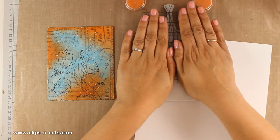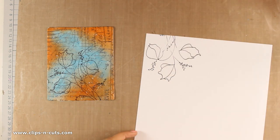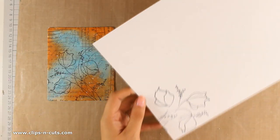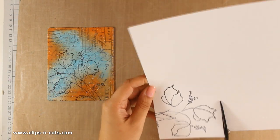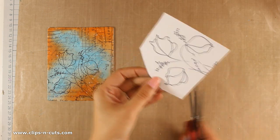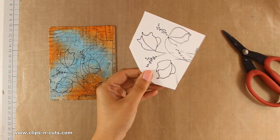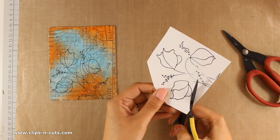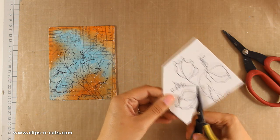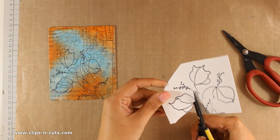Now I am going to stamp again the flowers on a white cardstock, because I want my flowers to be nice, white and vibrant. These are going to make a nice contrast against the blue and orange background. I am going to use my scissors to cut out all three flowers.